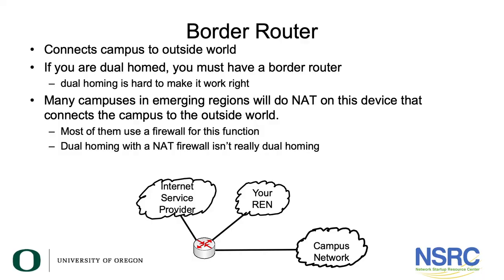Let's talk for a minute about your border router. For many of you, the border router will perform more simplistic functions, but the border router is mandatory if you're dual-homed — if you have two internet connections. The only way to properly make that work is to have a border router that provides functions to move traffic to the two outside connections.